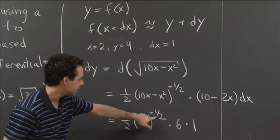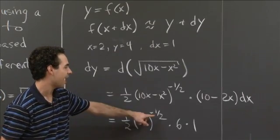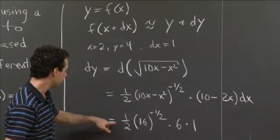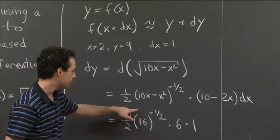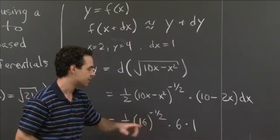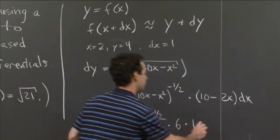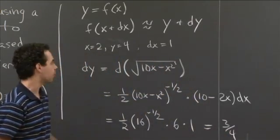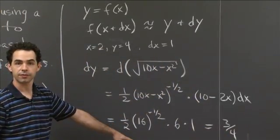So 16^(-½), 16^(½) is 4. So 16^(-½) is ¼. So this is ½ times ¼ times 6. That's 6/8, which is ¾. So our dy is ¾.